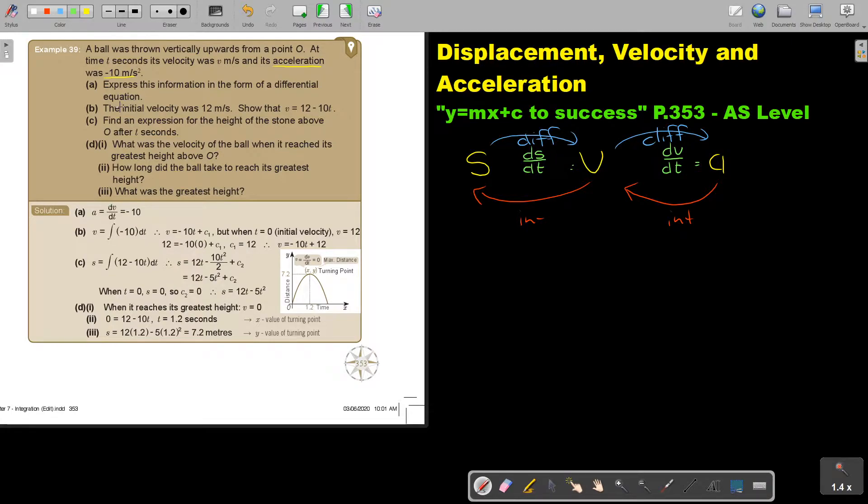So dv over dt is this. Express then number b. The initial velocity. Initial means t. What does initial mean? It means t will be equal to zero. Beginning. Was 12 meters per second. So velocity was then 12 meters per second. Show that v equals this.